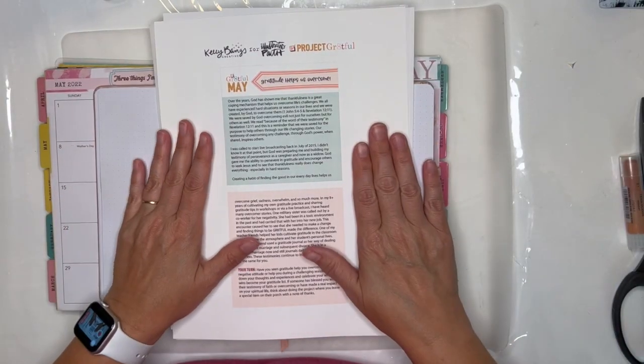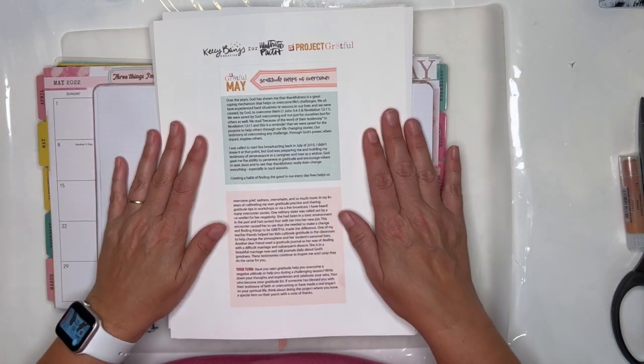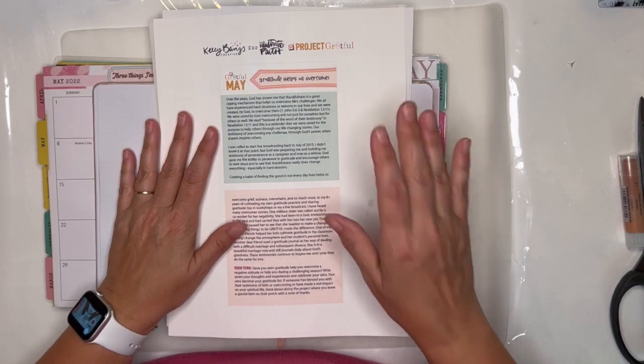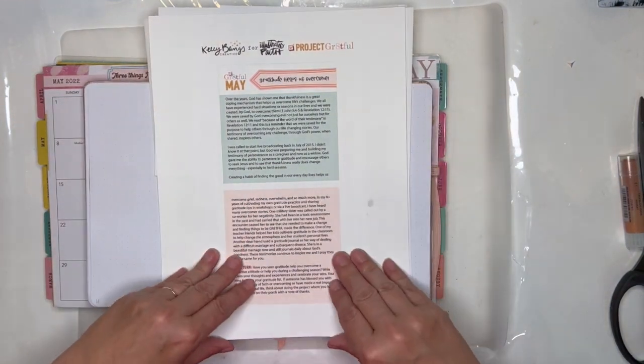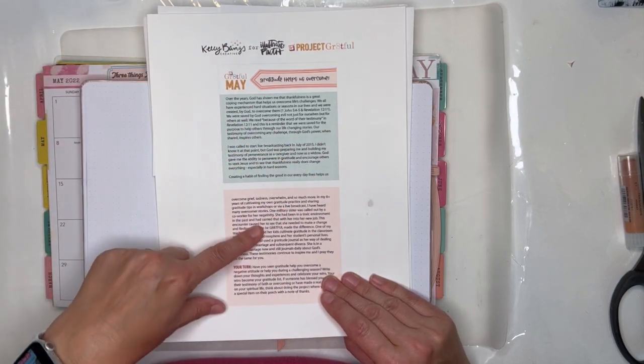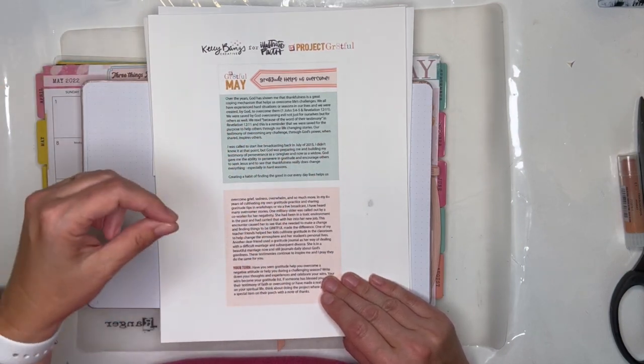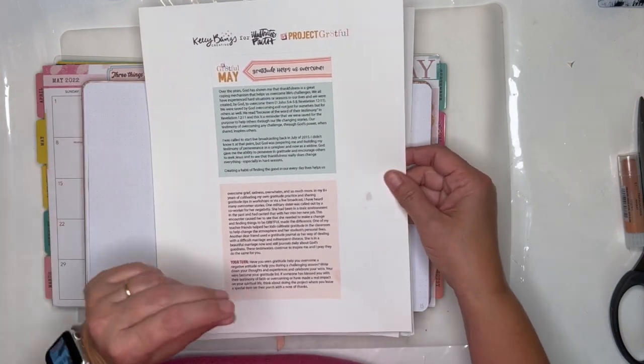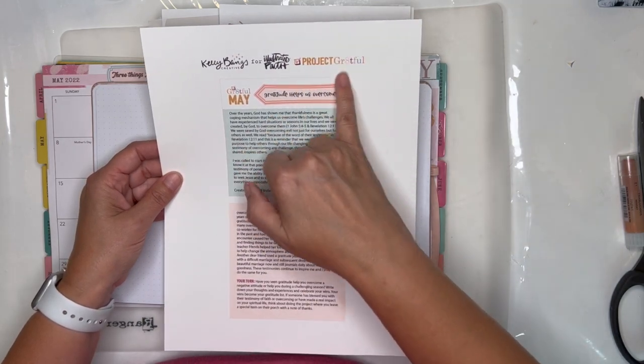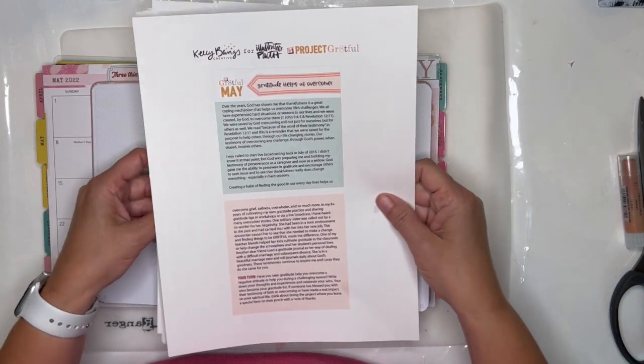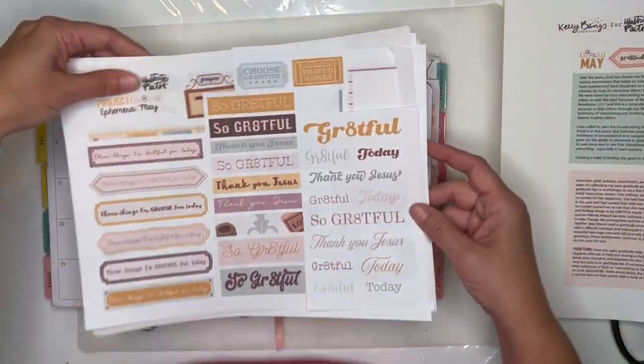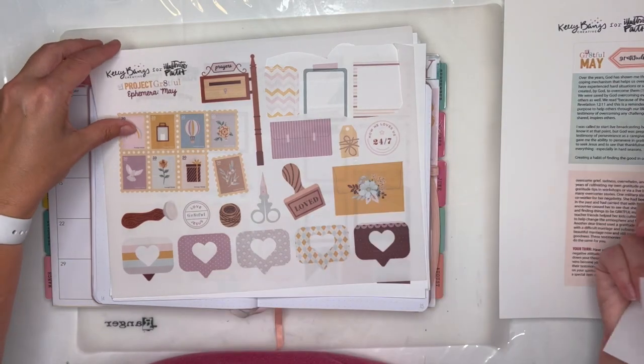Hey everybody, it's Julie. Thanks for joining me here today for some creative worship. I'm going to be creating my May project grateful setup. So here is the card for the month of May. I will link these products. These are found in the Illustrative Faith print and price shop and they're designed by Kelly Bangs Creative and Larissa who is Grateful Gal.